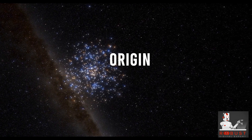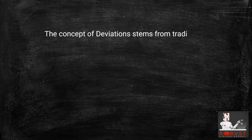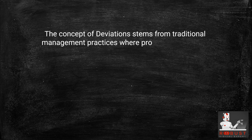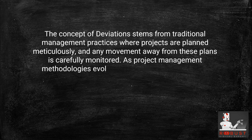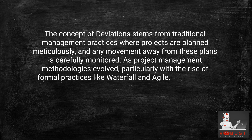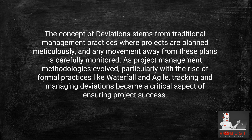Origin: The concept of deviations stems from traditional management practices where projects are planned meticulously, and any movement away from these plans is carefully monitored. As project management methodologies evolved, particularly with the rise of formal practices like Waterfall and Agile, tracking and managing deviations became a critical aspect of ensuring project success.